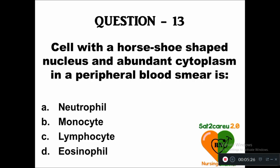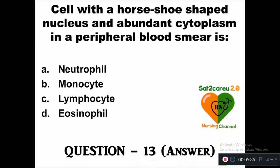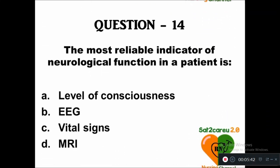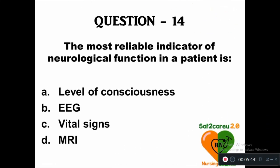Question 13: A cell with a horseshoe-shaped nucleus and abundant cytoplasm in your peripheral blood smear is — option A: neutrophil, B: monocyte, C: lipocyte, D: eosinophil. The right answer is monocyte — monocytes have a horseshoe nucleus. Question 14: The most reliable indicator of neurological function in a patient is — A: level of consciousness, B: EEG, C: vital signs, D: MRI.